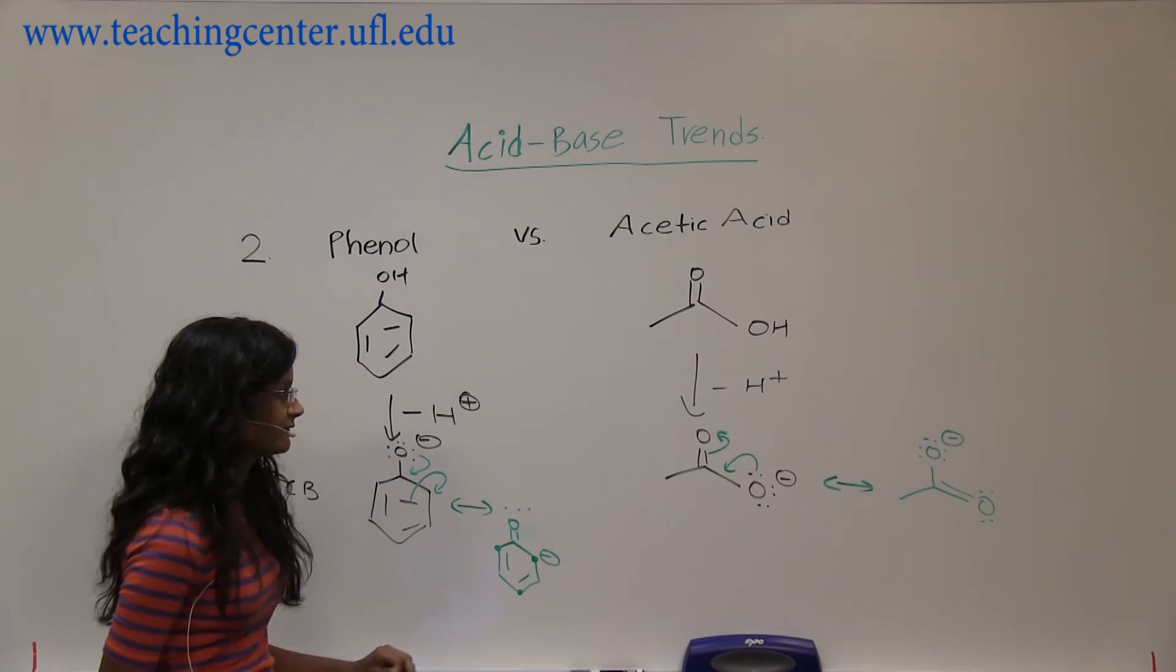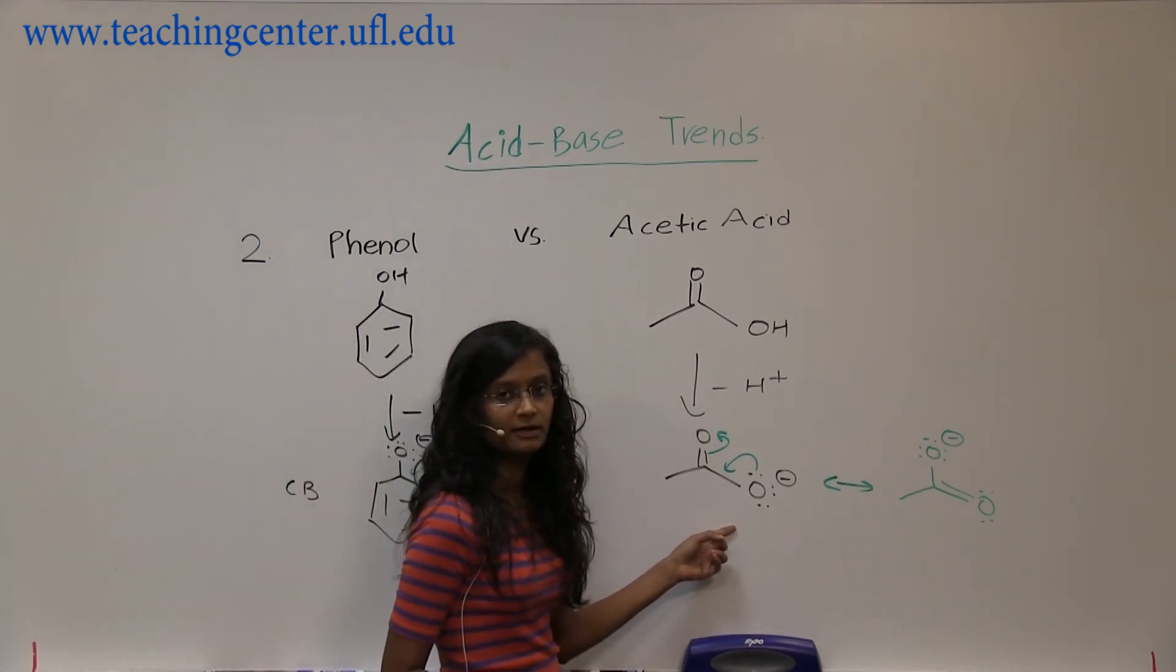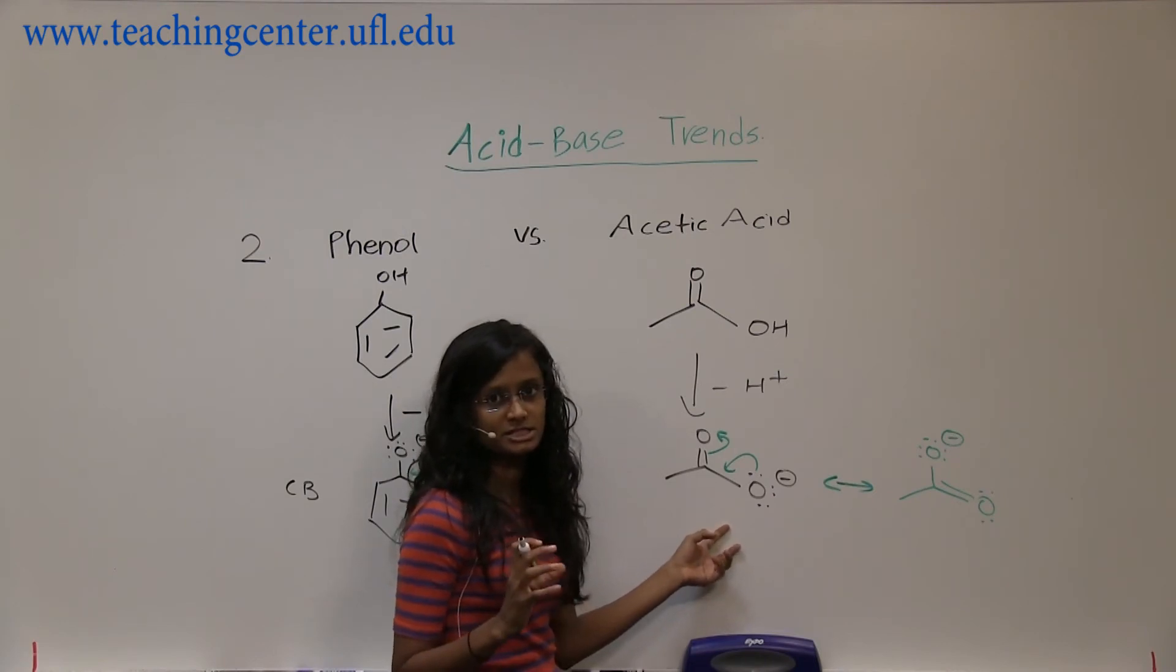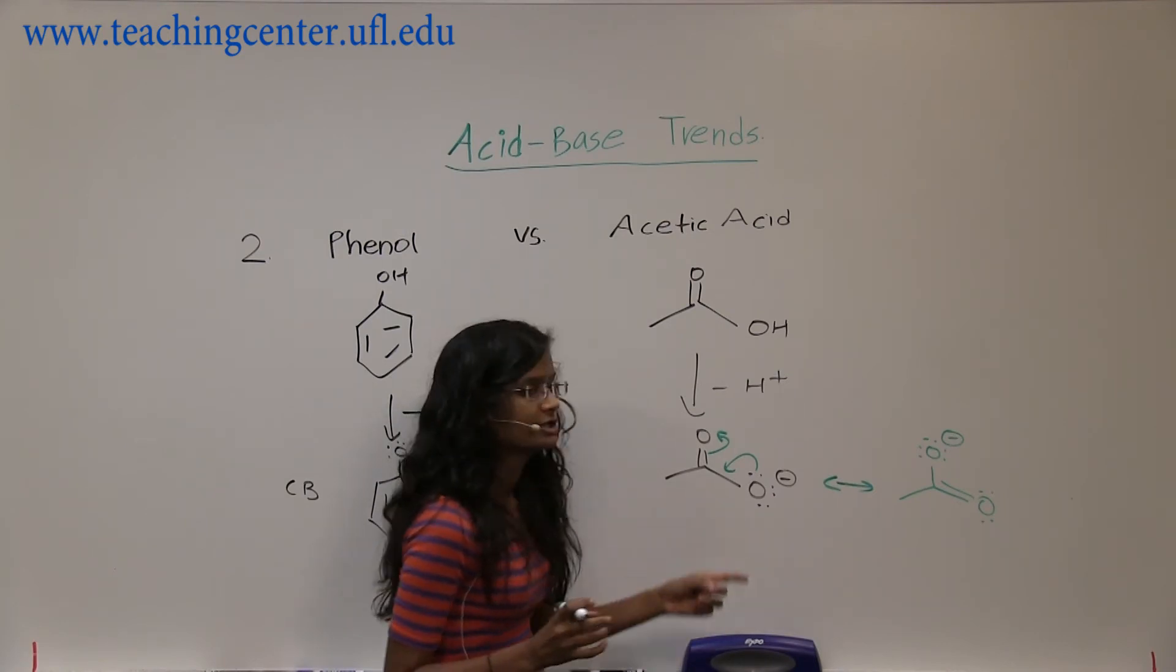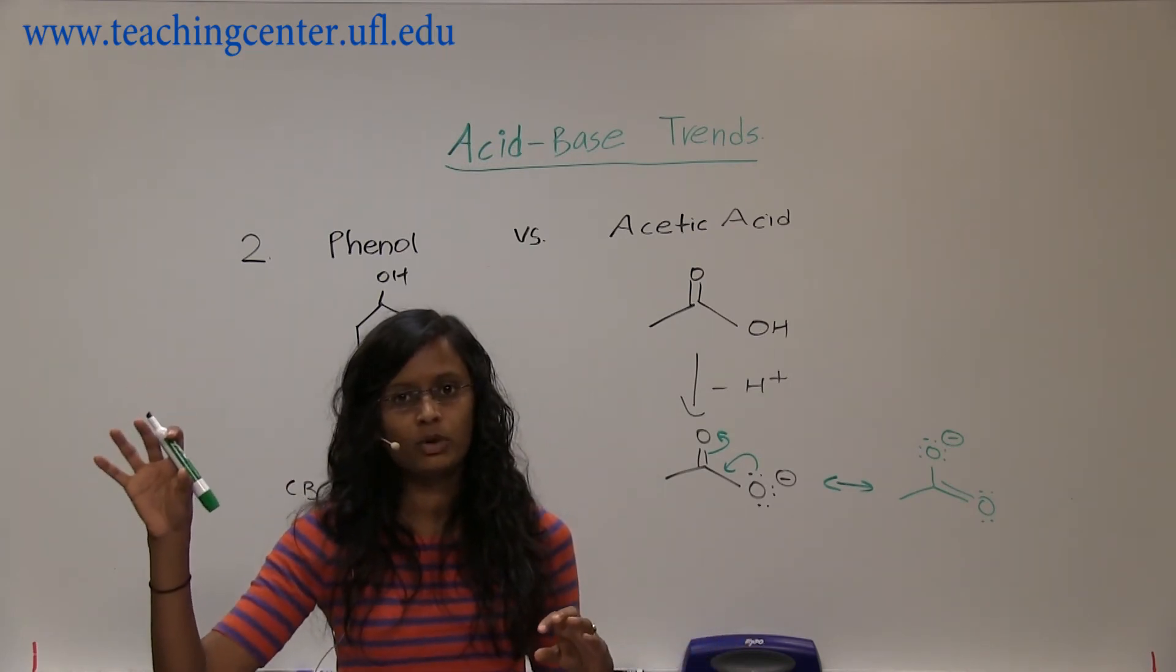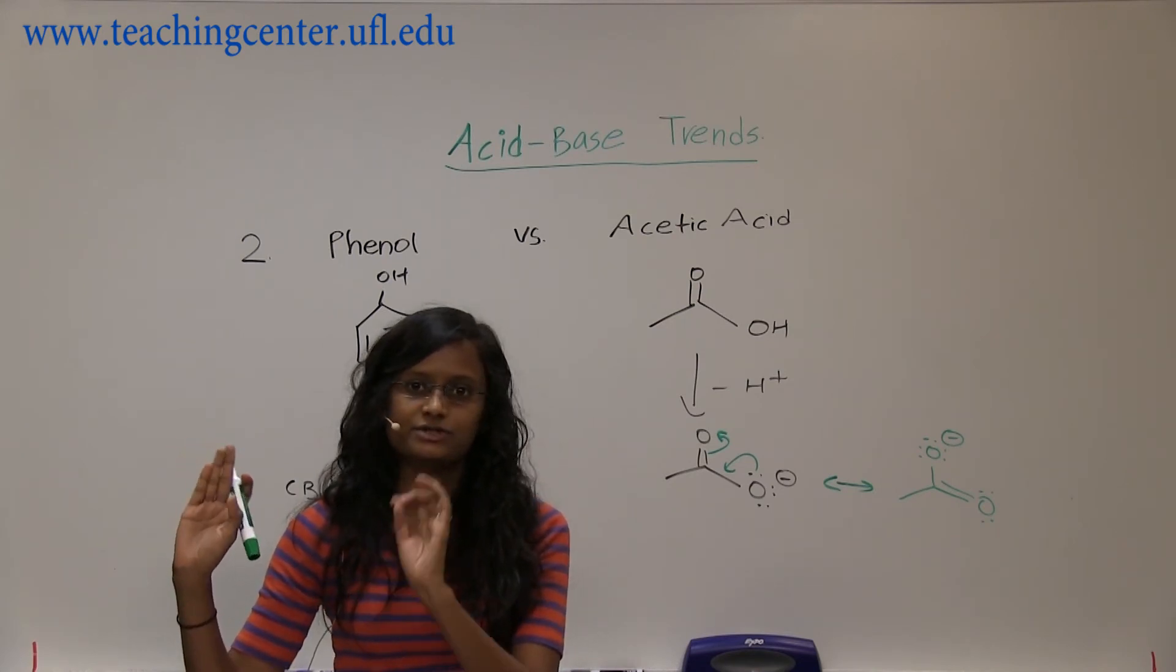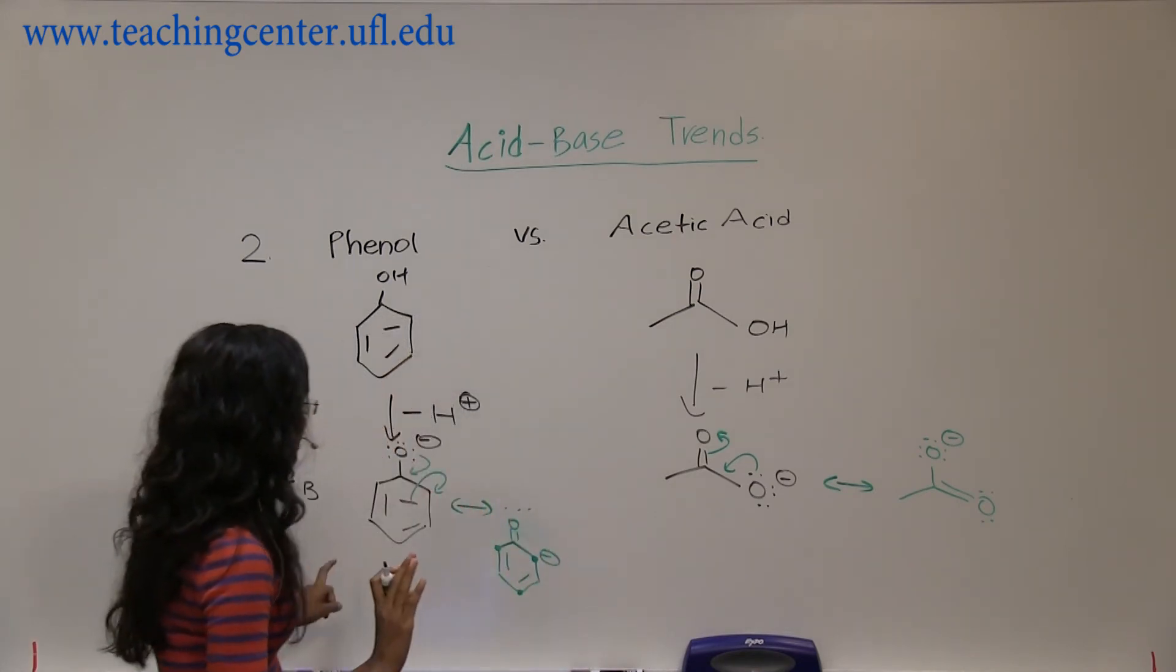Alright, that means we have two resonance structures here where both of them—in both of them—oxygen is containing the negative charge. So let's look at the periodic table: you have oxygen more electronegative than carbon, so oxygen is more happy with negative charge than carbon.